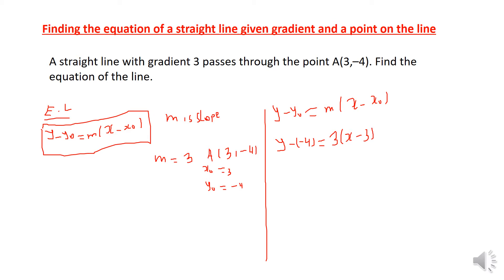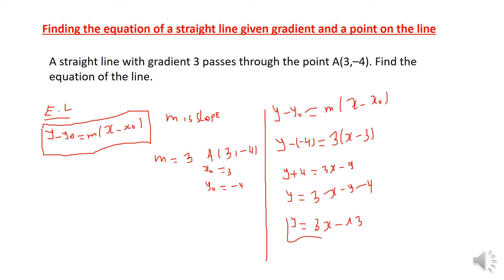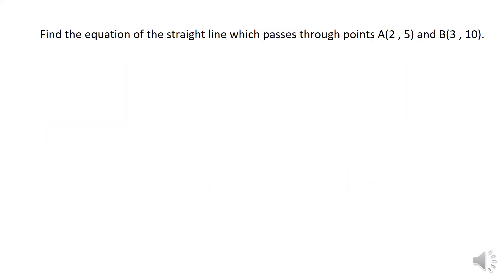Removing the brackets, y plus 4 is equal to 3x minus 9. Collecting like terms, y is equal to 3x minus 9 minus 4, which gives y equals 3x minus 13. This is the equation of the line we were asked to find.